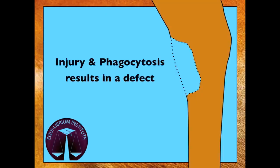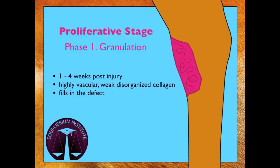The original injury and phagocytosis results in a defect that must be filled, bringing us to the second stage of wound healing. During the first part of the proliferative stage, granulation tissue fills in the void. This occurs during the first one to four weeks post-injury. Granulation tissue is highly vascular, weak, disorganized collagen.